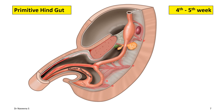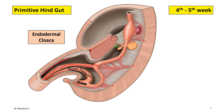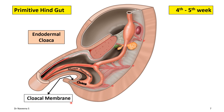The pre-allantoic part grows as a narrow tube, whereas the post-allantoic part starts dilating. Such dilated portion of hindgut is called the endodermal cloaca, which is related ventrally with the cloacal membrane.